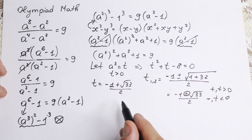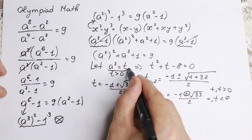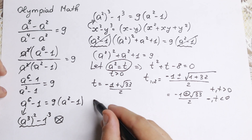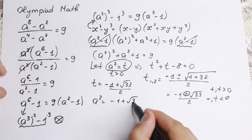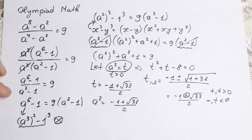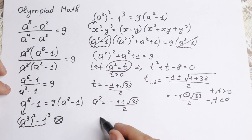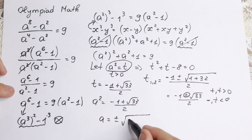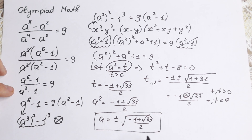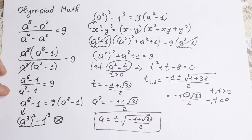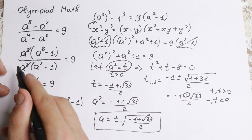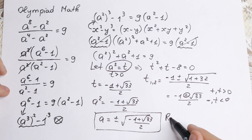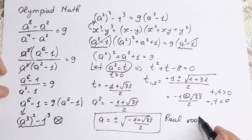Now we need to find a, using our substitution a squared equals t. So a squared equals minus 1 plus square root of 33, all over 2. Taking the square root of both sides, we get a equals plus or minus square root of the quantity minus 1 plus square root of 33, all over 2. So we have two real roots. With the negative t value we would have gotten complex roots, but since we cancelled a squared minus 1, those complex root cases were already eliminated. Our real roots are these two values.